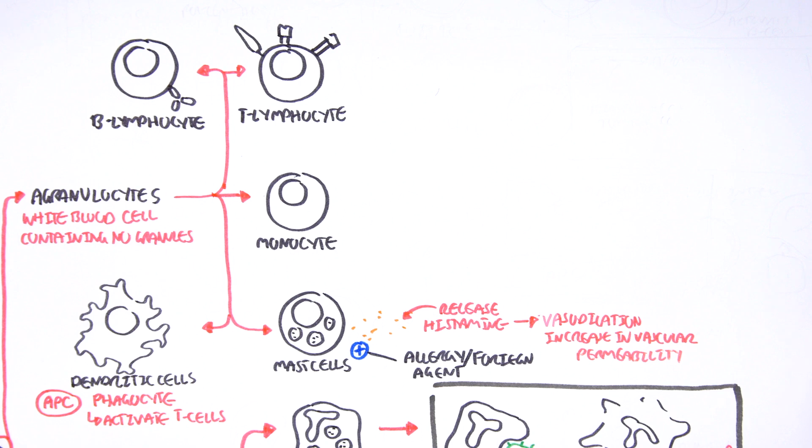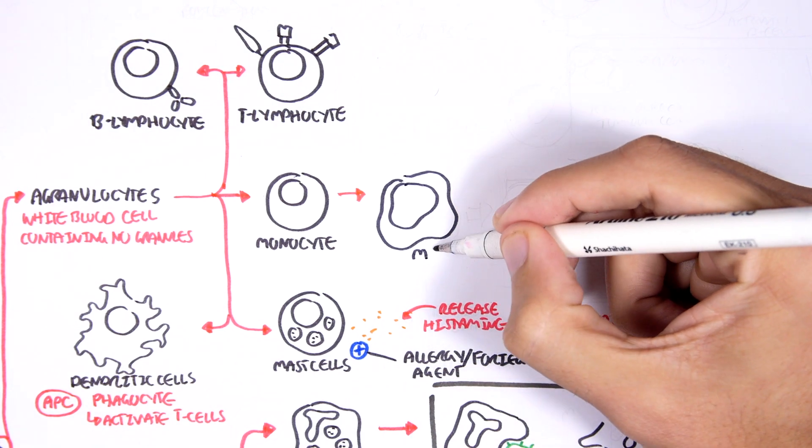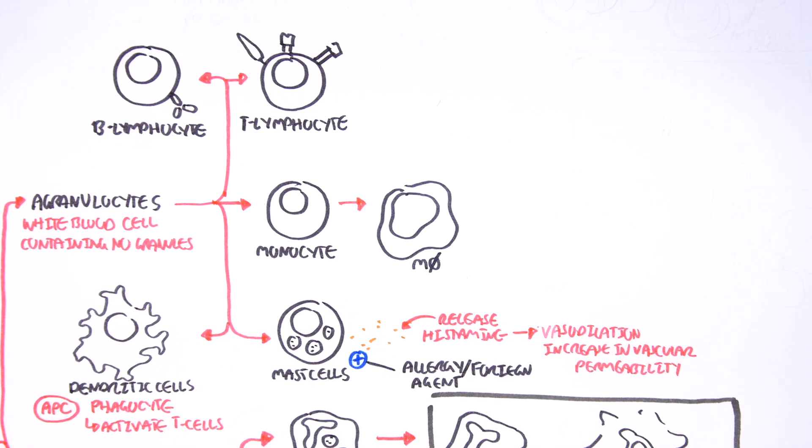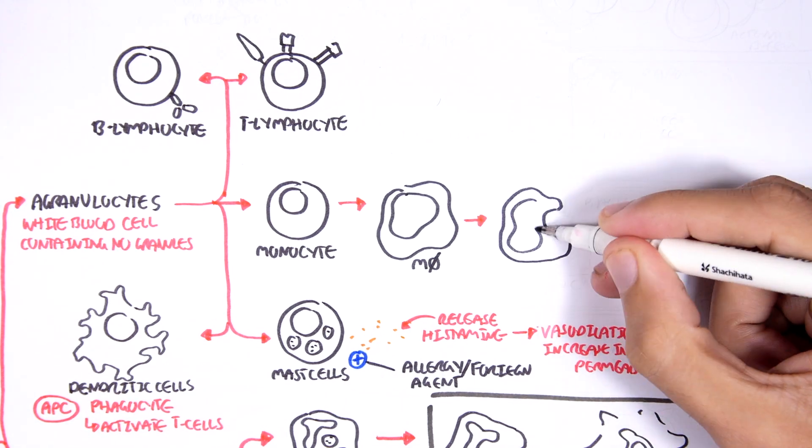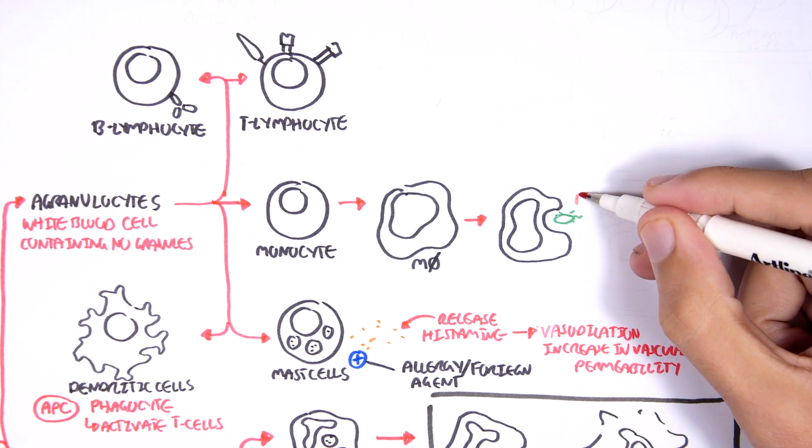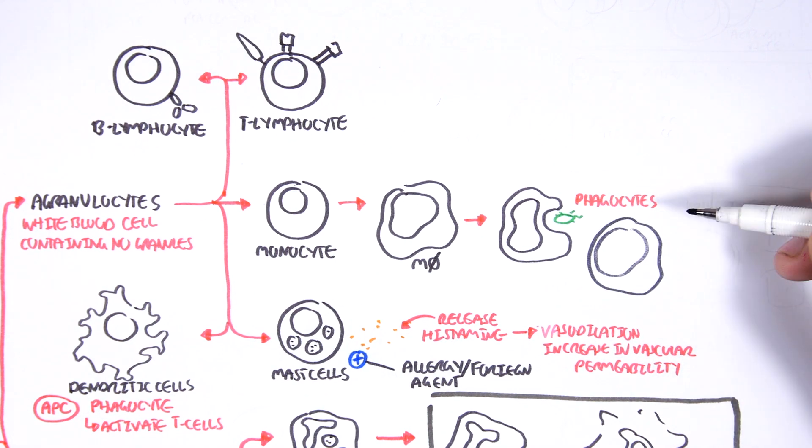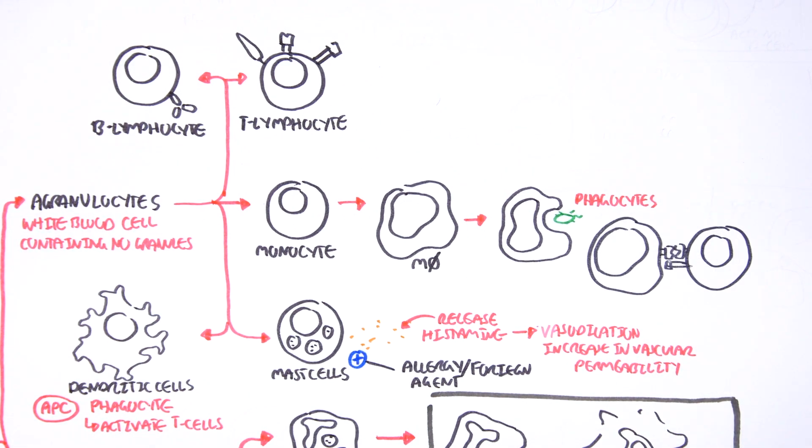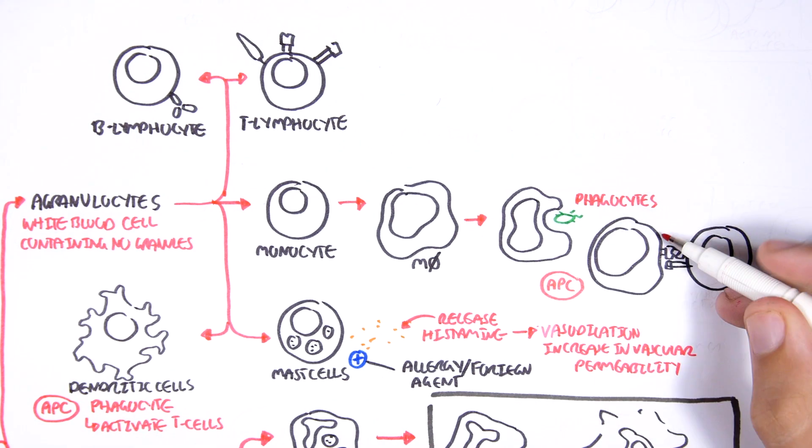Now we have monocytes. Monocytes, they circulate actually in the blood, and they are phagocytes, so they eat up things. But when a monocyte migrates from the blood into a tissue, the monocyte becomes what's known as a macrophage, big eaters. Macrophages have many functions, phagocytes, and they are also antigen-presenting cells, so they activate T lymphocytes, just like the dendritic cells.